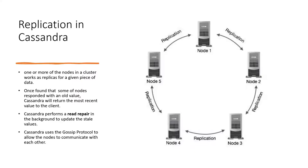One or more nodes in a cluster work as replicas, so all of them hold replicated data. If a node is found to have an old value, Cassandra will return the most recent value to the client. If stale data is found, read repairs happen in the background and the stale data is updated. There is something called the gossip protocol, which is used to allow intercommunication between each node.